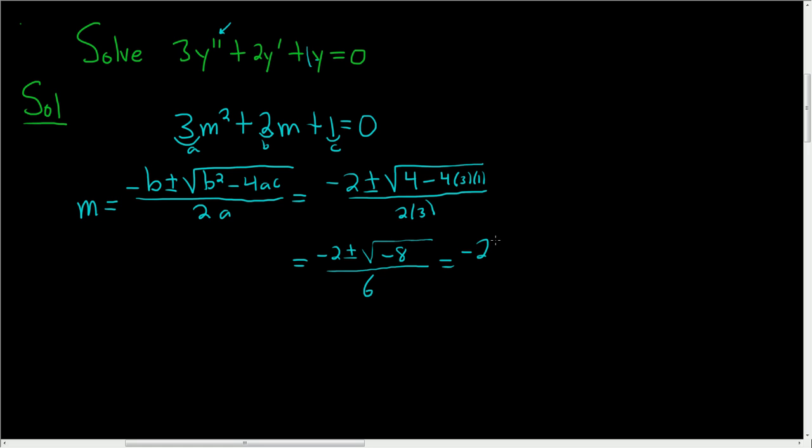This is negative 2, plus or minus i square root of 8, all divided by 6. This can be written as negative 2, plus or minus, and the square root of 8, if we think of the largest factor of 8 that's a perfect square, that's 4. So we can write it as the square root of 4 times square root of 2, and the square root of 4 is 2. So the square root of 8 is 2 square root of 2.